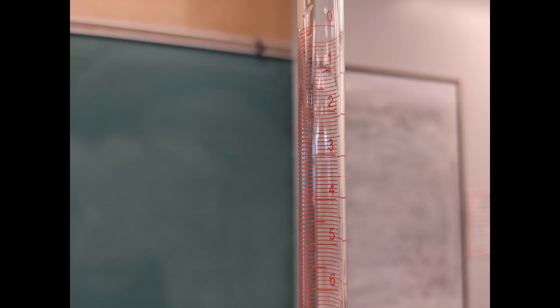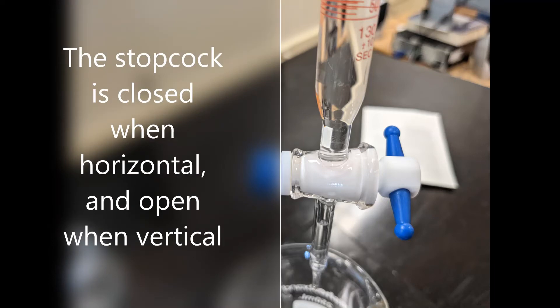The burette is the most important piece of equipment for this experiment. As part of the cleaning process, ensure that the stopcock, which is the handle at the bottom which controls the flow, works properly, and that it allows for precise control. Always store the burette in an upright position with the burette clamp.